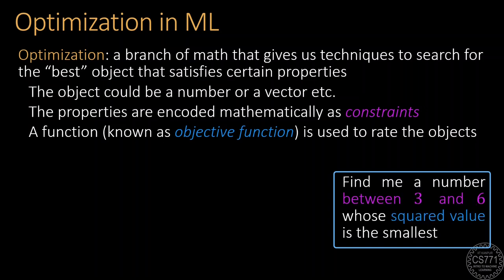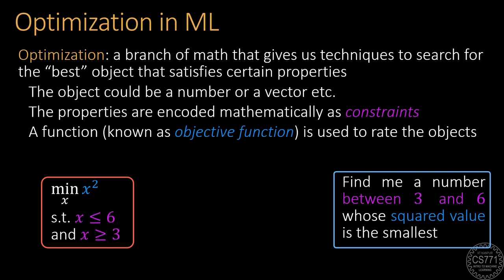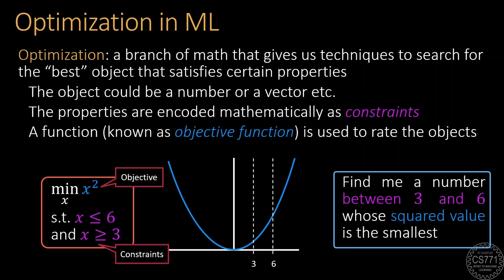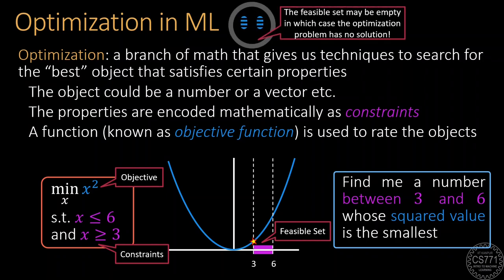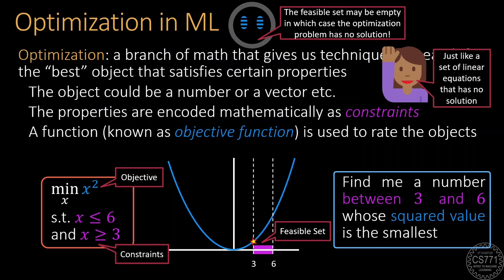Let us take a toy example to illustrate this. Suppose we wish to find the smallest value of the function x² in the interval 3 to 6. We use one constraint to demand that our mystery number be smaller than 6, another to demand it be larger than 3, and we use x² as the objective function. The solution is x = 3. The set of objects satisfying all constraints is called the feasible set — here, all numbers simultaneously smaller than 6 and larger than 3, i.e., the interval [3, 6]. Note that optimization problems may have no solution if their feasible set is empty, similar to conflicting linear equations.